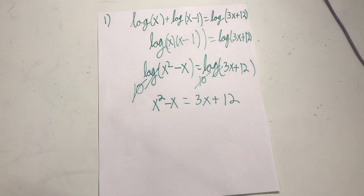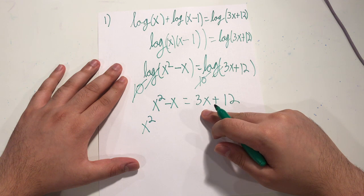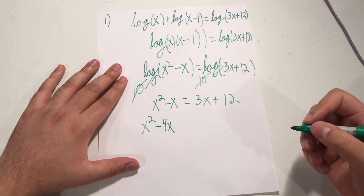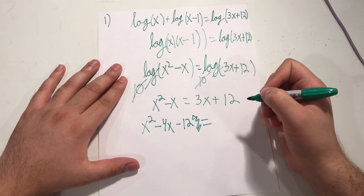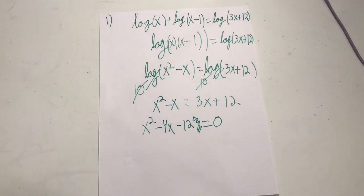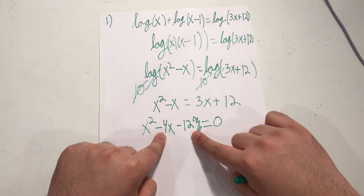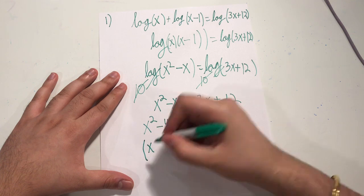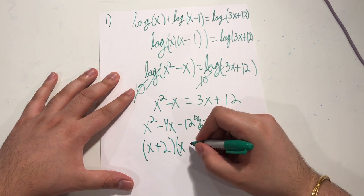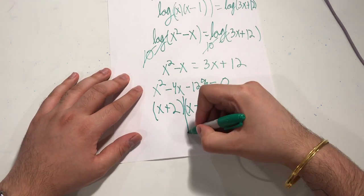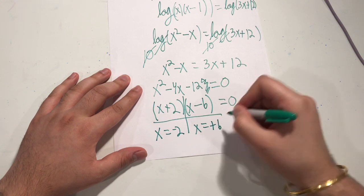At this point, this should be familiar — solving a quadratic equation. I'll bring everything to one side: x squared, subtracting 3x gives negative 4x, and subtracting 12 gives minus 12, all equal to 0. I can factor this using the AC method — finding numbers that multiply to negative 12 and add to negative 4. That gives me x plus 2 and x minus 6 equals 0, so x equals negative 2 and x equals positive 6.